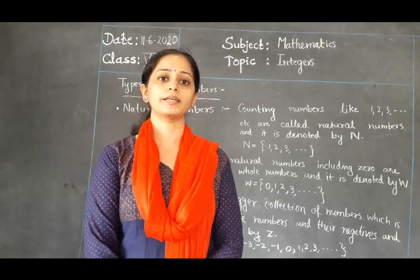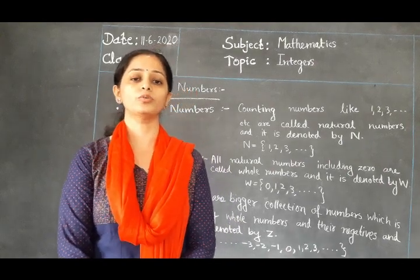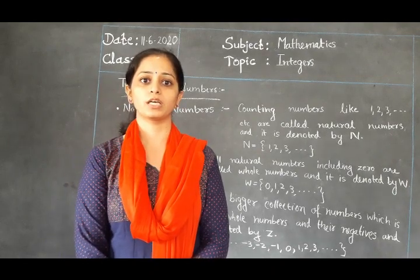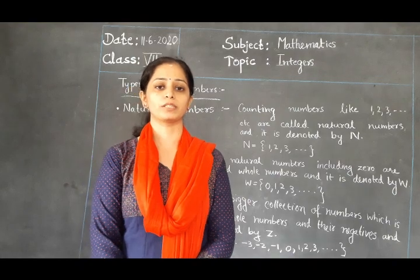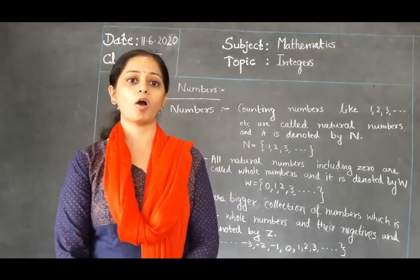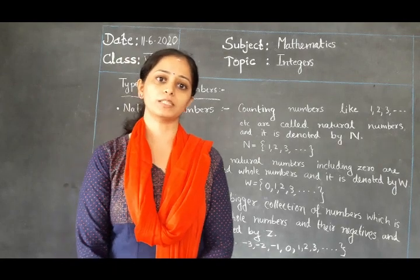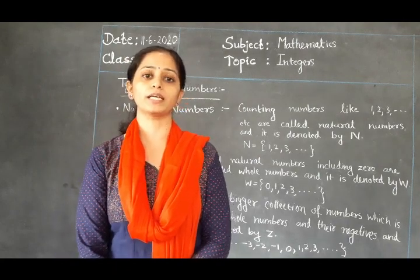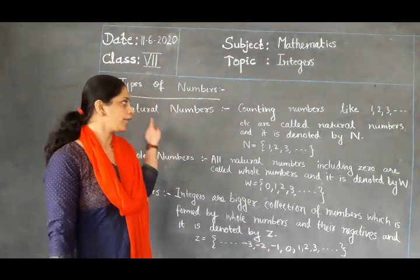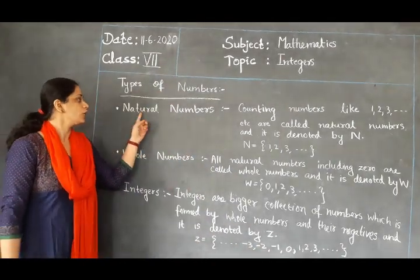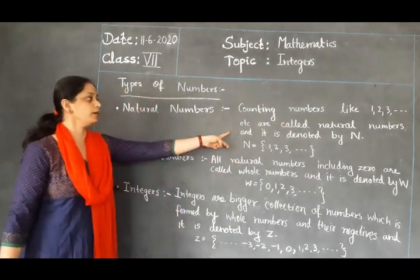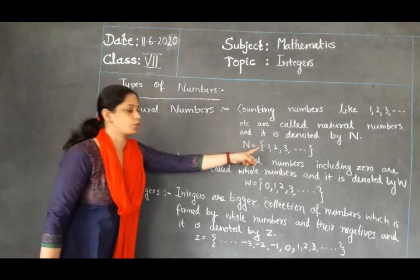Before starting the lesson, I would like to give the basic types of numbers. We all know the different types of numbers, like natural numbers, whole numbers, odd numbers, even numbers, prime numbers — so many types of numbers you have learned. First, you will see natural numbers. Natural numbers are counting numbers, like 1, 2, 3, 4, etc., and are called natural numbers.